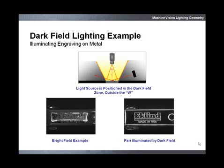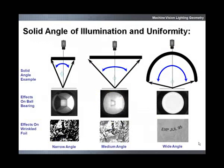When dealing with challenging applications, such as inspecting print on wrinkled foil, the solid angle of light coverage is critical. When referring to a solid angle, the goal is typically to provide uniform lighting within the angle. The degree of coverage is application dependent.